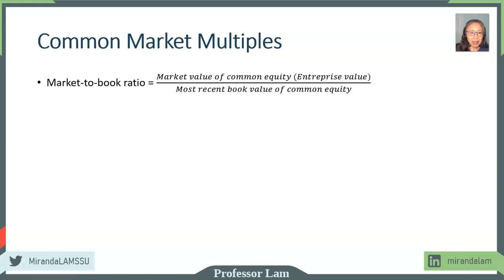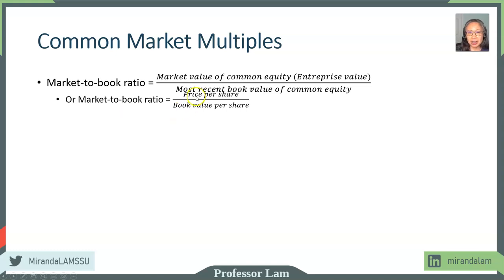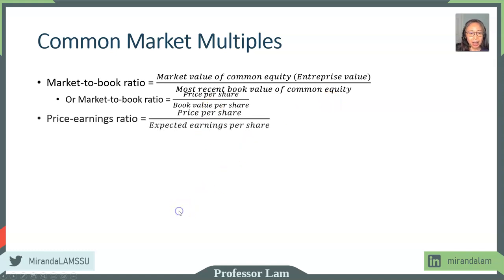One multiple that is used a lot is called the market-to-book ratio. It's basically the market value of common equity — sometimes called the enterprise value — divided by the book value of common equity. This is the aggregate value of the firm divided by the aggregate book value. More commonly when using market multiples, we use per-share values. So another way to define the market-to-book ratio is to take the stock price per share divided by the book value per share. Book value per share is simply the value of common equity divided by the number of shares outstanding. Similarly, the price-earnings ratio or PE ratio — you have heard that a lot — is one of the most popular market multiples, defined as market price per share divided by earnings per share.